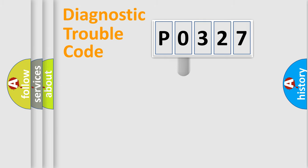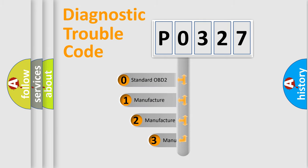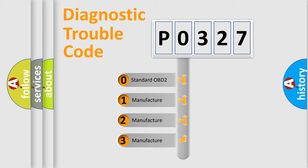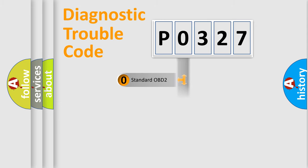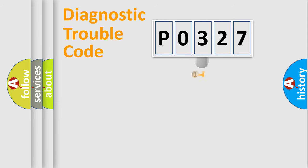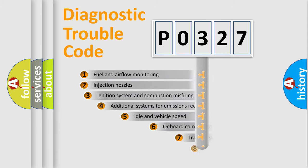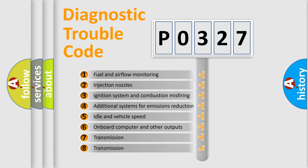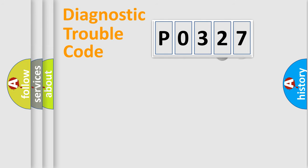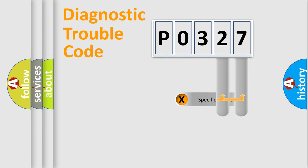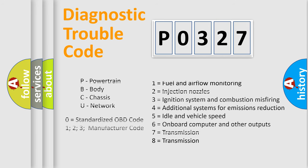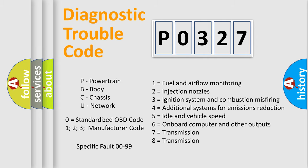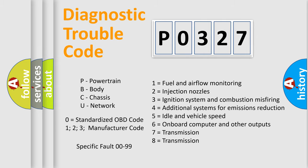This distribution is defined in the first character of the code. If the second character is expressed as zero, it is a standardized error. In the case of numbers 1, 2, or 3, it is a manufacturer-specific error. The third character specifies a subset of errors. This distribution is valid only for the standardized DTC code, and only the last two characters define the specific fault of the group.